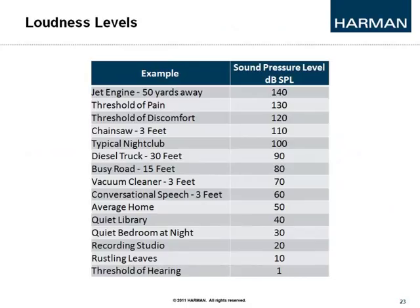Loudness is described as SPL, or dB SPL — sound pressure level. As you can see on this chart, the range is quite large. One decibel is considered the threshold of human hearing — the smallest change a person can detect — and one dB of change is barely perceptible. Most people don't notice a change until 3 dB, and it becomes obvious at 10 dB, where most people would say the sound is doubly as loud. This is a logarithmic scale, and at various power levels, either 3 or 6 dB represents a doubling of power or output.